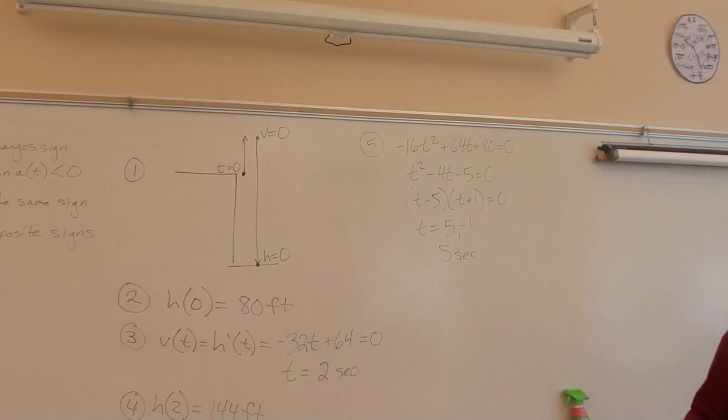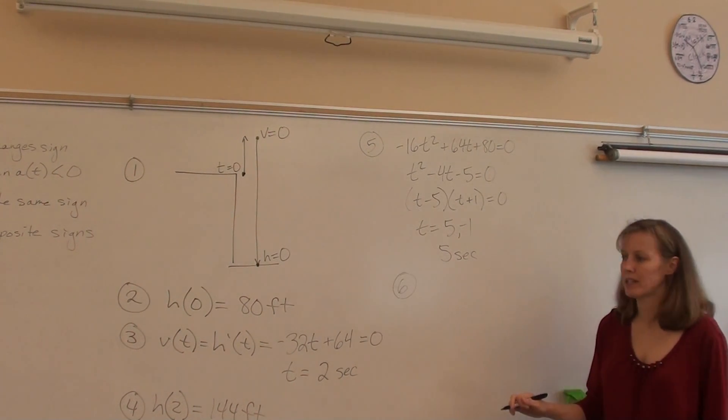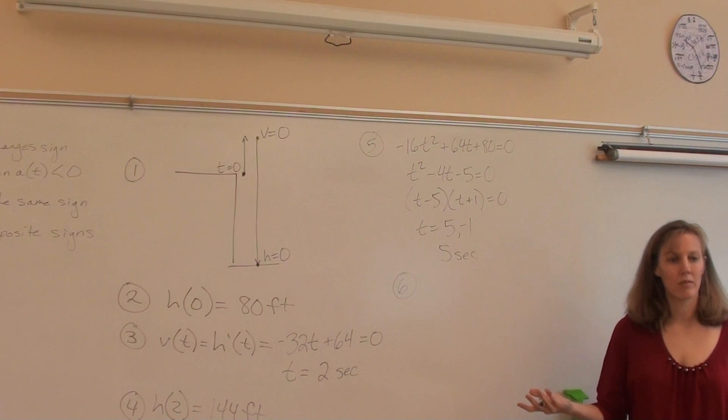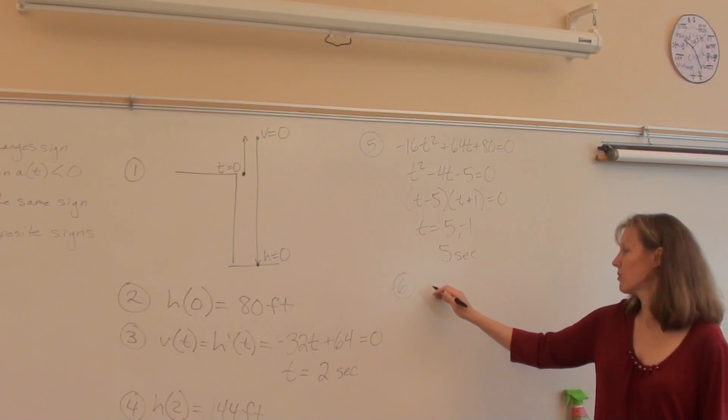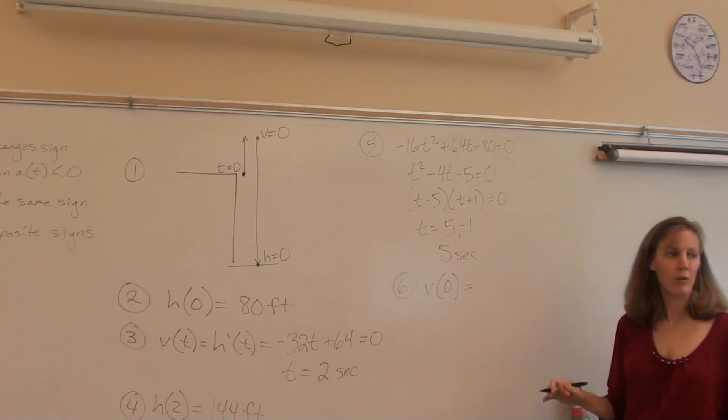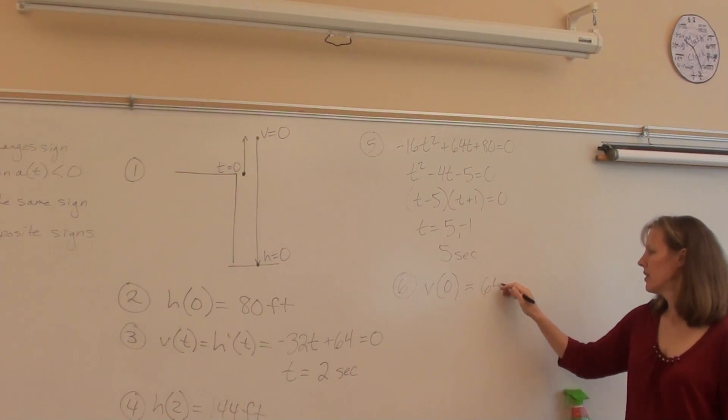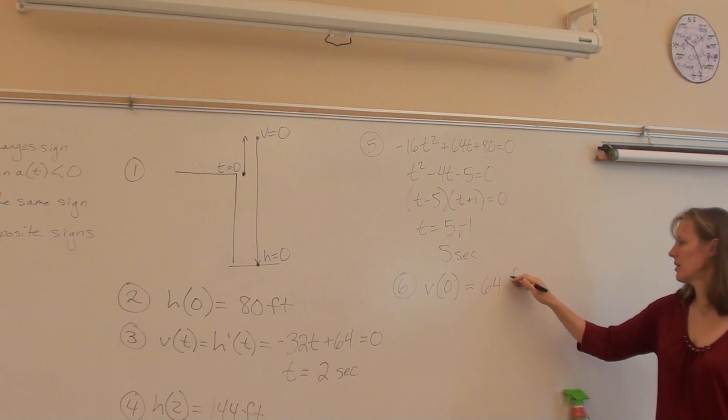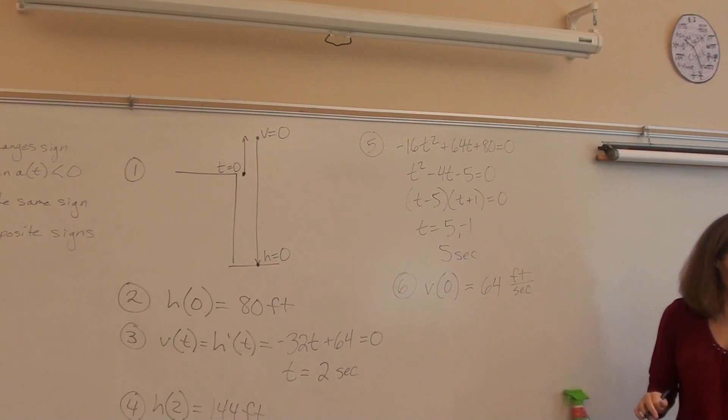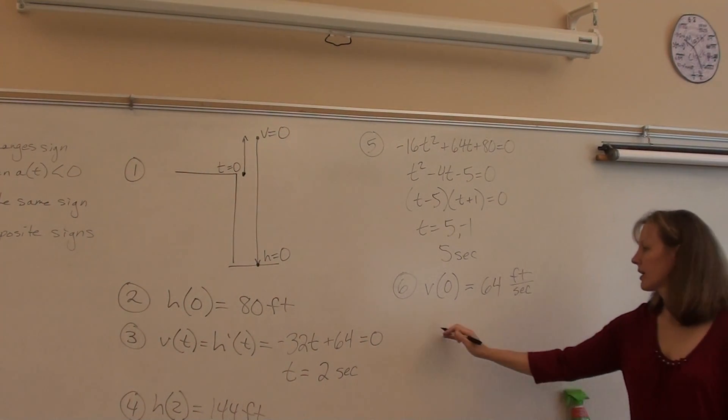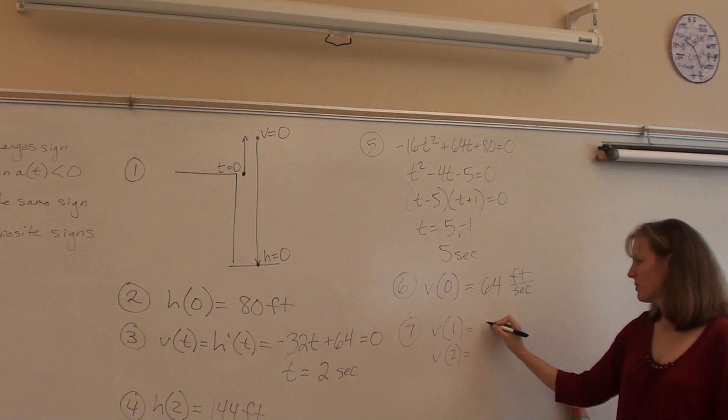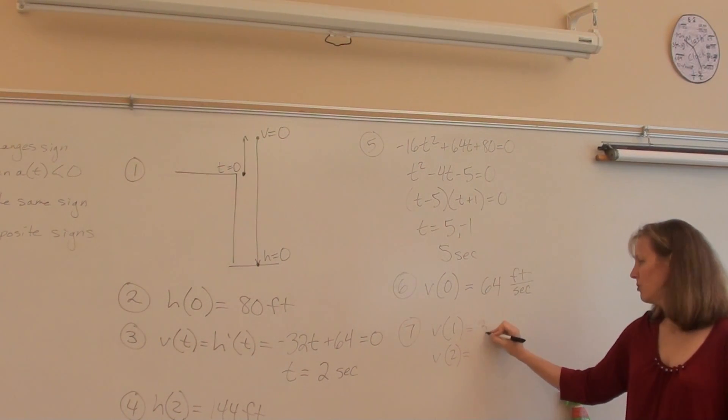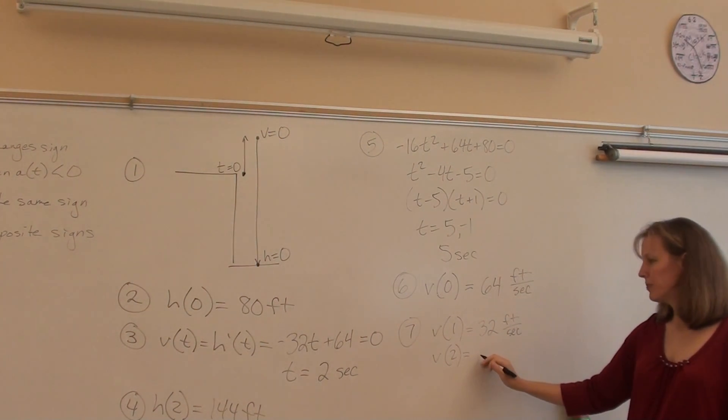So the next question. What is the initial velocity? How would we find initial velocity? What's happening at the beginning? Time is zero. Where do you think we want to plug that time zero into? The velocity function, right? We're looking for V of zero. What is V of zero? 64. What would be the units? Feet per second. Number seven. Velocity at one second and two seconds. So V of one, V of two. Just plugging in a one. What's V of one? 32 feet per second. What's V of two? Zero.